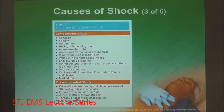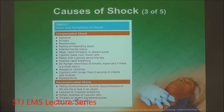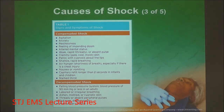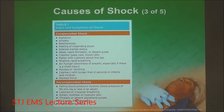Beta-2 receptors in the lungs cause bronchodilation, increasing breathing ability, as oxygen demand is higher. The brain is very sensitive — all of this is happening to keep the brain alive. There's that restlessness and anxiety, and sometimes a sense of impending doom. Talk to your patients; they will give you clinical clues as to what stage of shock they're in, in addition to vital signs, BLS management, and ALS interventions.